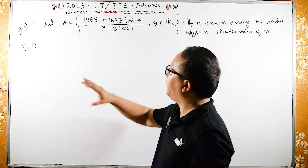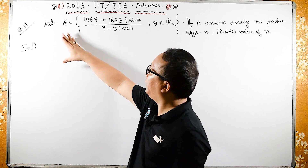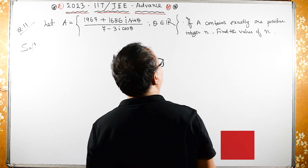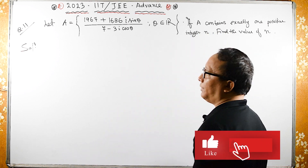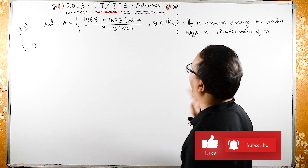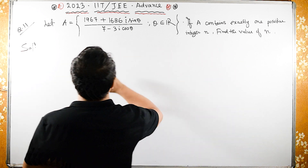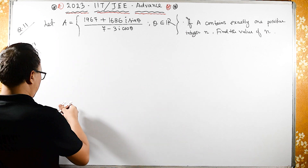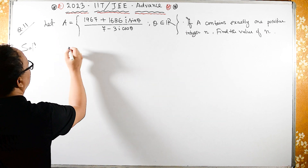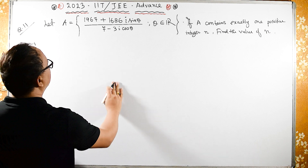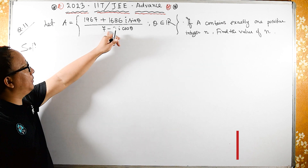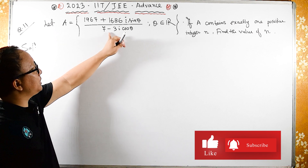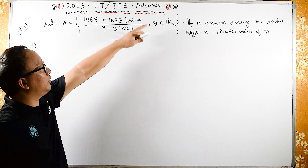Let us see this question. We have a equals to this, and if a contains exactly one positive integer n, we need to find the value of n. So let us consider a equals to n. The first step is to multiply numerator and denominator by its conjugate, which is 7 plus 3i cos theta.